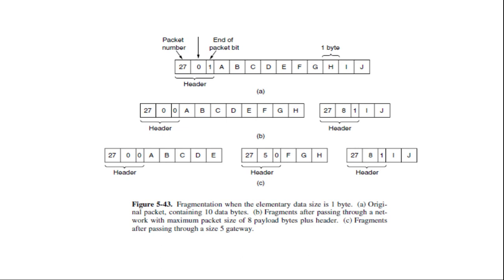This leads us back to the original solution of getting rid of fragmentation in the network. The strategy used in the modern internet is called path MTU discovery. It works as follows.